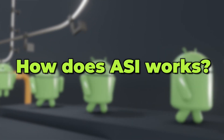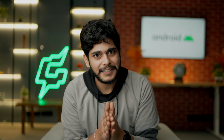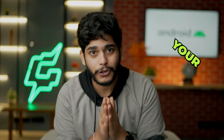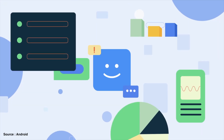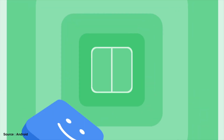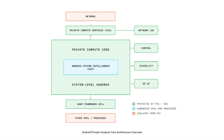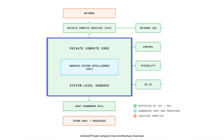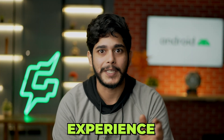You might be wondering how ASI works and whether it is safe to share your data with ASI, essentially Google. The answer is yes — ASI is designed to secure your private data on the device itself. All your personalized recommendations and data stay on your device, not on Google's servers. The place where all these processes happen is known as the Private Compute Core, meaning none of your data is shared with Google; it is only collected to make your Android experience better.